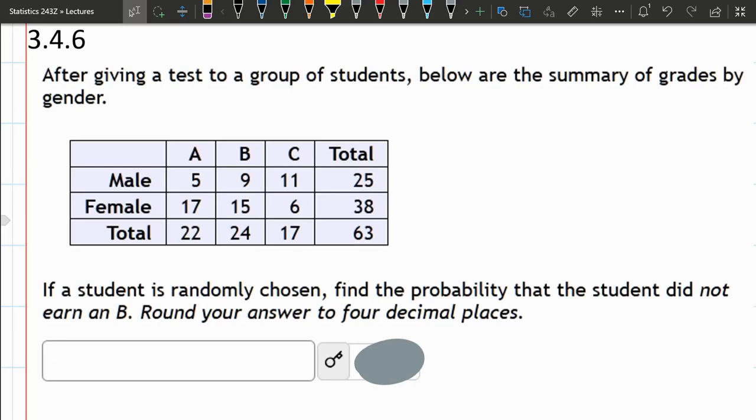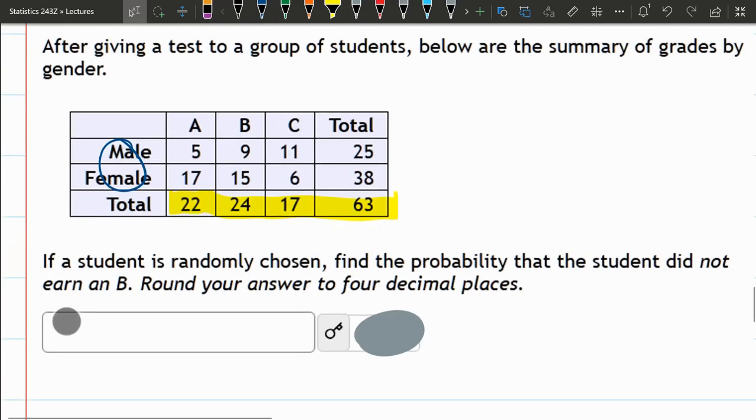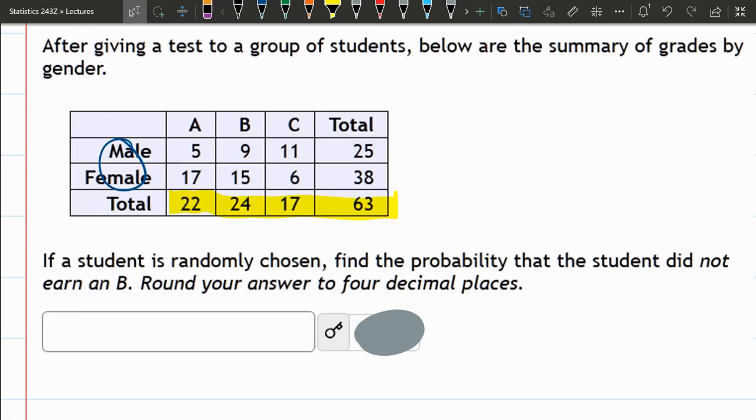Now, there's nothing here about gender, so I could actually ignore the male and female differences. This has nothing to do with gender, so we can really just restrict down to the total. The total does still distinguish between A, B, and C students, but if I only looked at this, I would be throwing away any information on gender. But this question didn't specify anything about gender, so it's okay to only look at these totals.